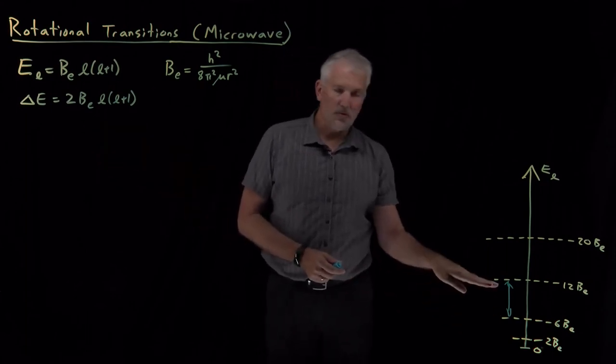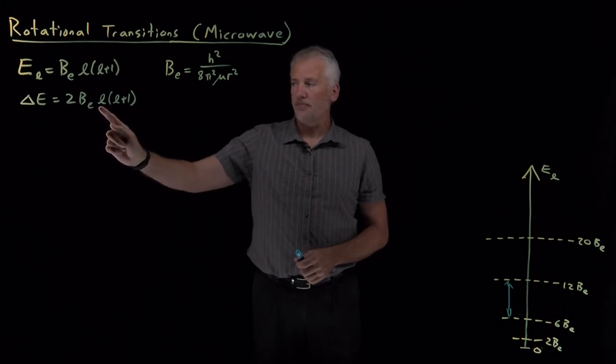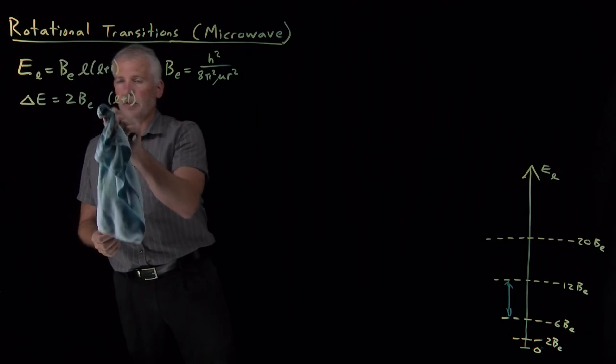The difference in energy between any pair of these states can be calculated. The difference between the L-th and the L-plus-1-th energy levels can be given by this expression, where actually there's a typo in that expression, it's just 2 times B_E times L-plus-1.